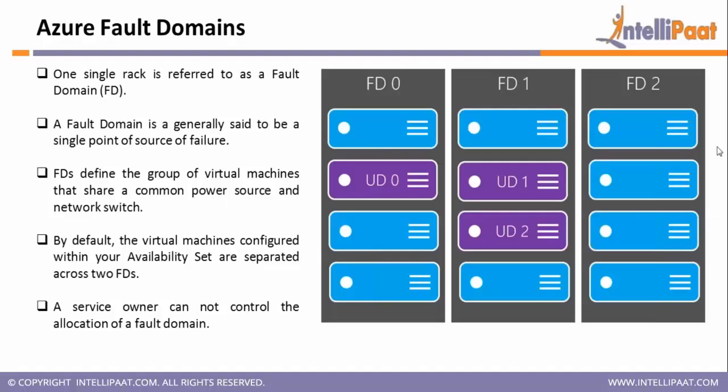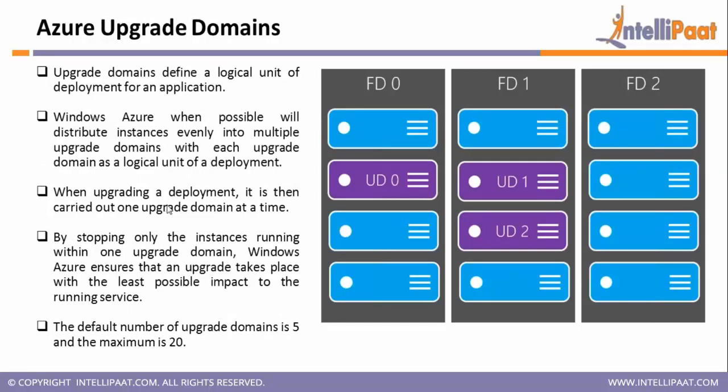The next term is upgrade domain. The upgrade domain is basically a logical unit of deployment used by Azure for the purpose of patching. When you distribute your instances, Azure ensures that your instances are placed in different upgrade domains.